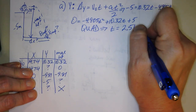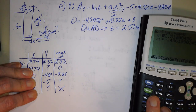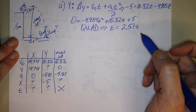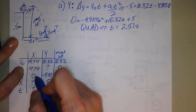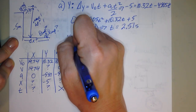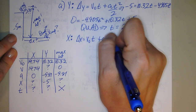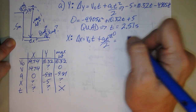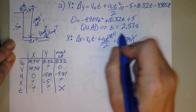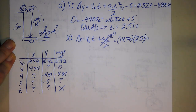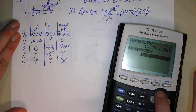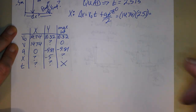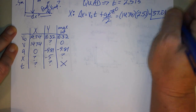Time is 2.51 seconds for the whole trip. Now switching to X information: delta X = V0·T + (A·T²)/2, and since A in X is zero, this simplifies to V0·T. V0 in X is 14.74 times 2.51, giving a range of 37.01 meters.